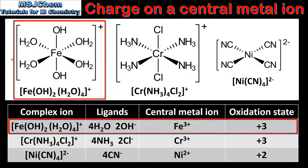In the complex ion on the left, the central metal ion is an iron ion. The ligands are 2 hydroxide ions and 4 water molecules, and the charge on the complex ion is 1+. Hydroxide ions are negatively charged, so the total charge on the ligands is 2-. Subtracting the total charge on the ligands from the charge on the complex ion, we can determine that the central metal ion is the Fe 3+ ion and the oxidation state is +3.